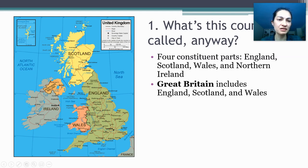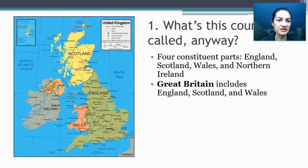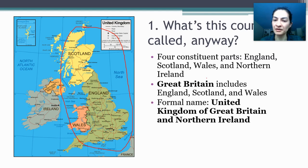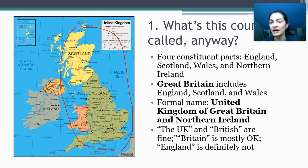Great Britain is the big landmass that includes England, Scotland, and Wales. Northern Ireland is separate. The formal name of this country is the United Kingdom of Great Britain and Northern Ireland — that's a lot of syllables — so in general we call it the UK.